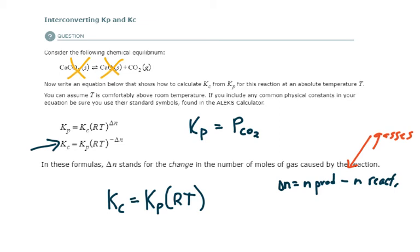So I've got one mole of gaseous products, zero moles of gaseous reactants. So delta N is one, and this is going to be raised to the negative one power.